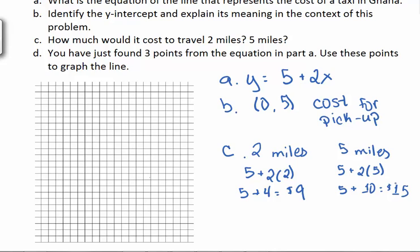Part D, we found 3 points, and we want to use these points to graph the line. So the first point we found was from part B. So if I let these be my axes, here's going to be my y-axis. The bottom line will be my x-axis. I need to go up 5. So I have 1, 2, 3, 4, 5. The next point says if I go over 2, that's going to cost me $9. So 5, 6, 7, 8, 9. The next one says if I go 5 miles, that's $15. So here's 9, 10, 11, 12, 13, 14, 15. And that was 5 miles. Here. From there, it's just a matter of connecting the dots.